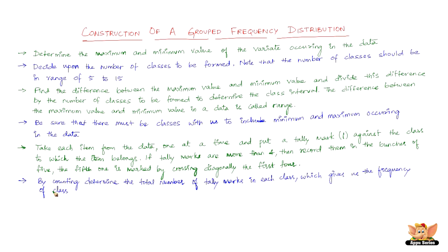The sixth step: by counting, determine the total number of marks in each class, which gives us the frequency of class. The seventh step: check that the total of all frequencies is same as the total number of observations.